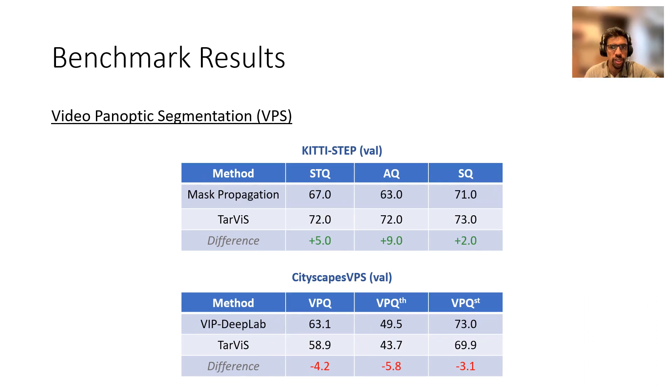For video panoptic segmentation, we see that Tarvis performs very well on KittyStep but on Cityscapes VPS, the current SOTA method outperforms us by 4.2% but it's worth noting that VIP DeepLab requires depth maps for training whereas we do not.